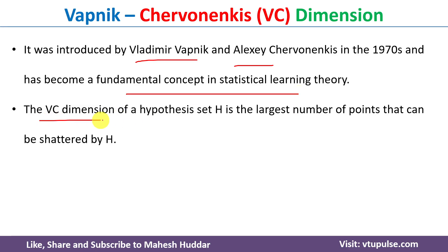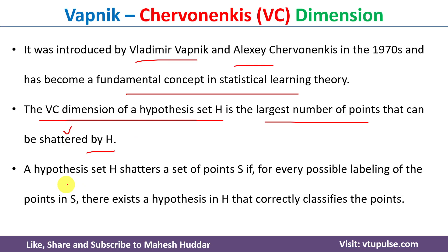VC dimension of a hypothesis set H is the largest number of data points that can be shattered by H. Now, what is shattering? A hypothesis set H shatters a set of points S if, for all possible labelings of the data points S, there exists a hypothesis in H that correctly classifies those data points.